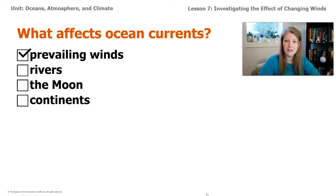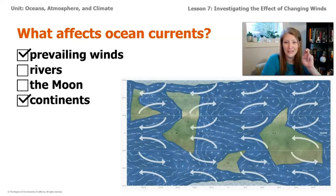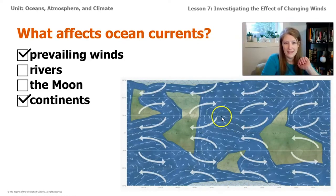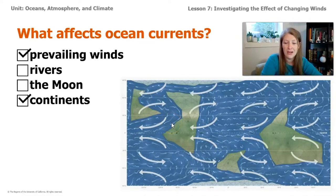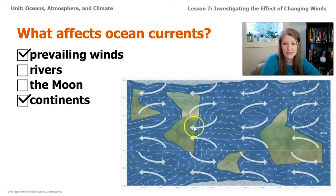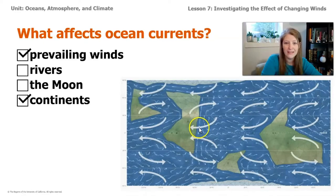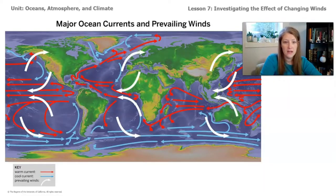But what else? Do rivers or the moon or continents have anything to do with ocean currents? The answer is yes — the continents also affect ocean currents. When we were exploring the sim, we saw two things affected ocean currents: the prevailing winds, represented by these big white arrows pushing on the ocean currents, and the giant continents. Sometimes a current wants to flow towards the west but gets blocked by a continent, so it has to travel up or down the continent.